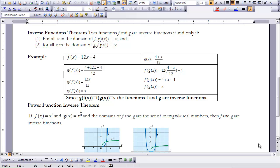Now remember we stated earlier in the chapter that composite functions are not commutative. But if functions are inverses of each other, they are commutative and they equal x. So let's take a look at this example. I have f(x) = 12x - 4 and g(x) = (4 + x)/12.